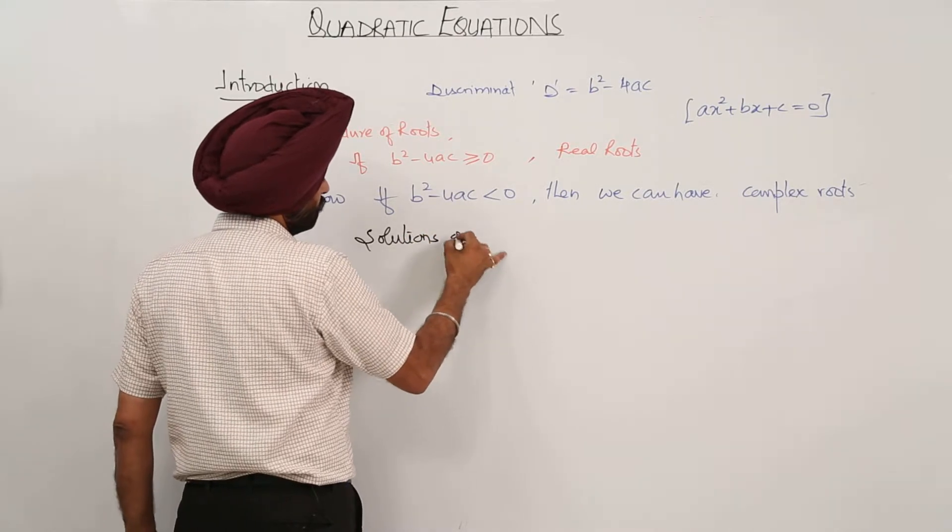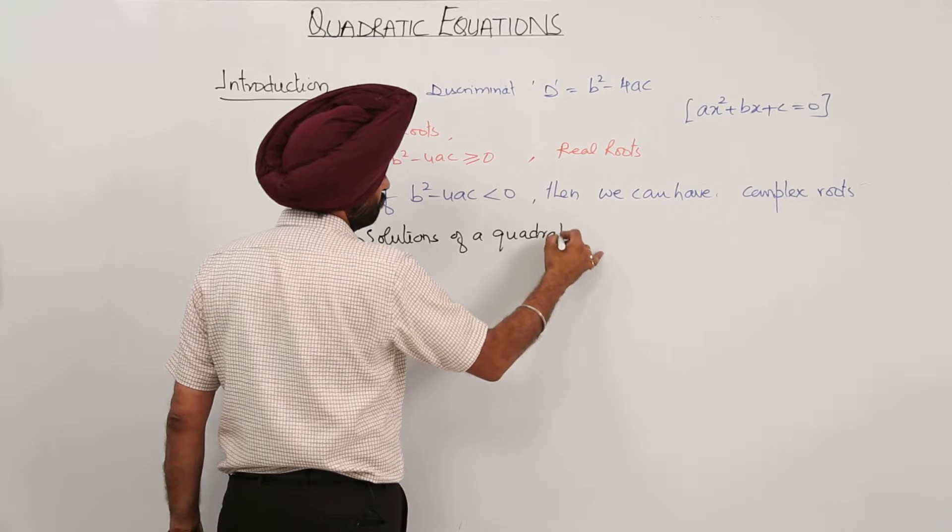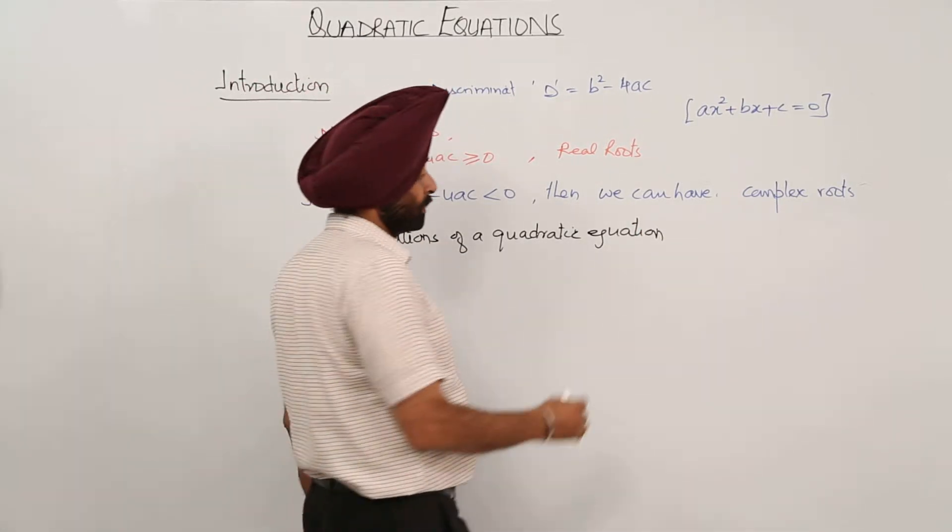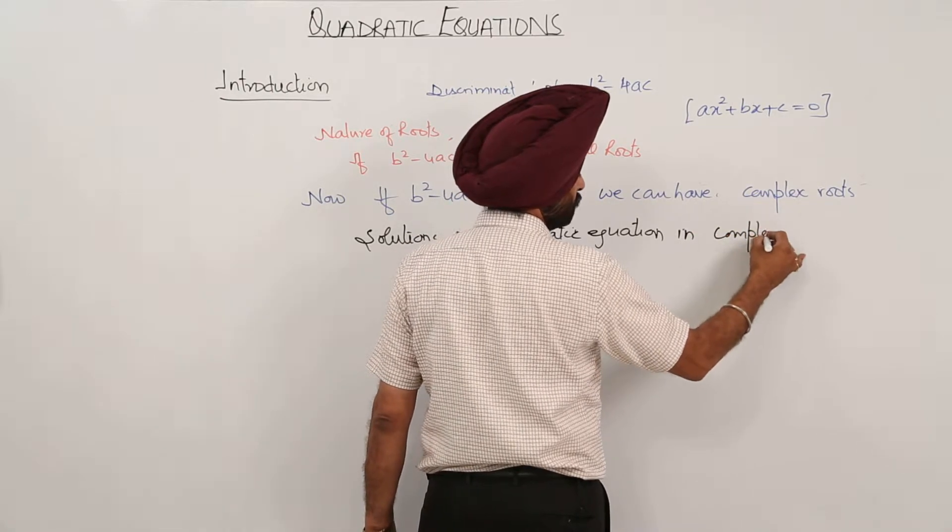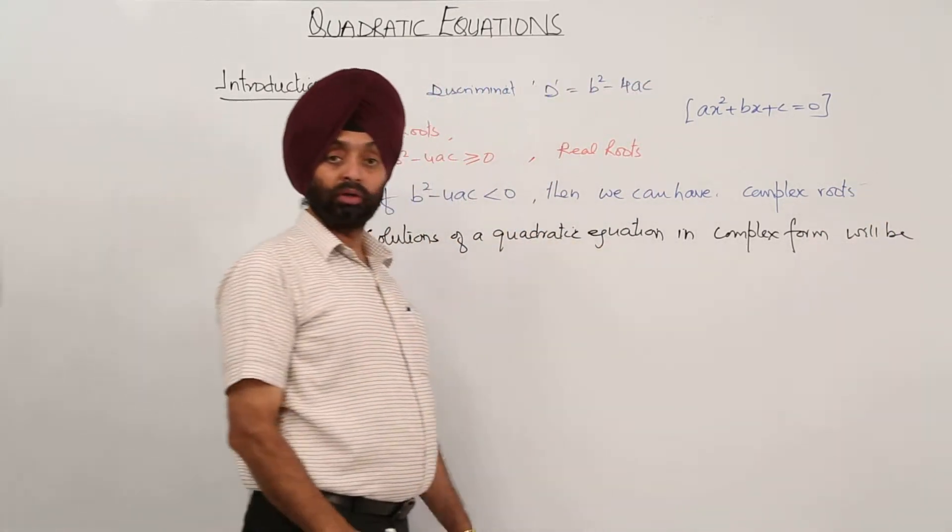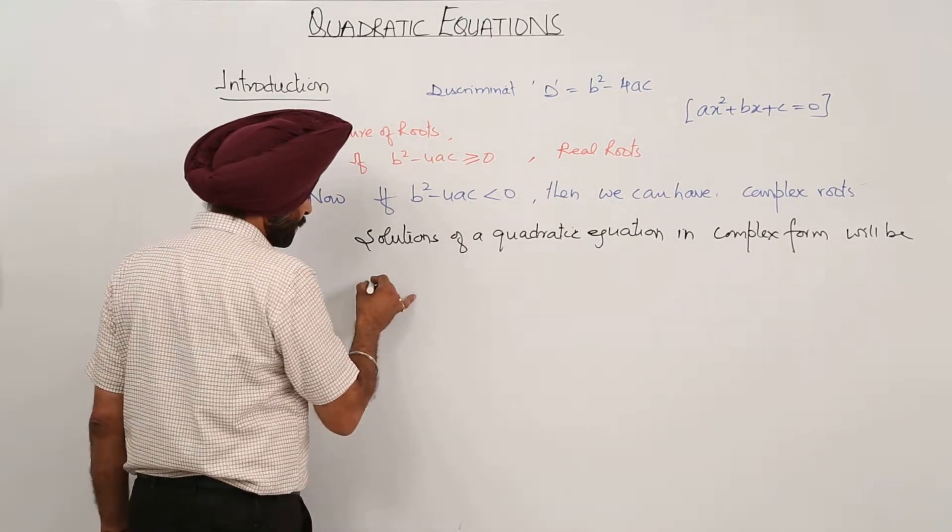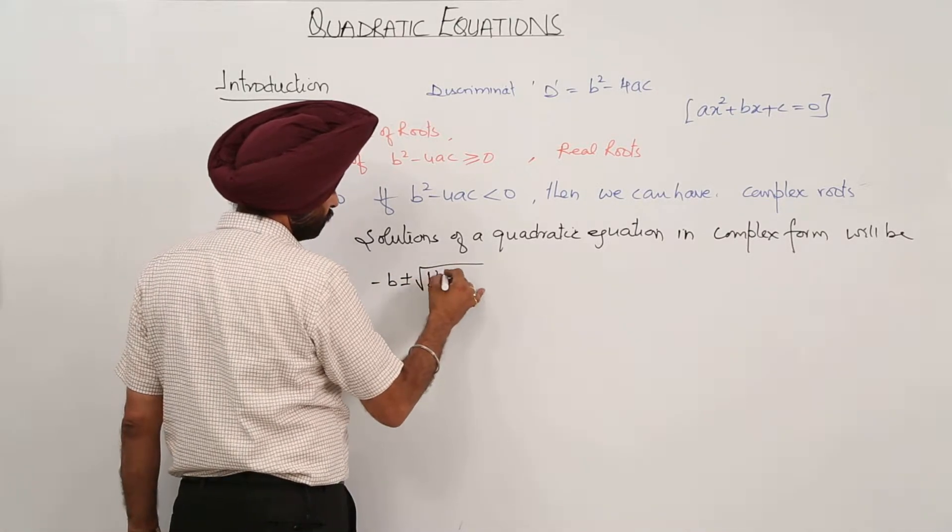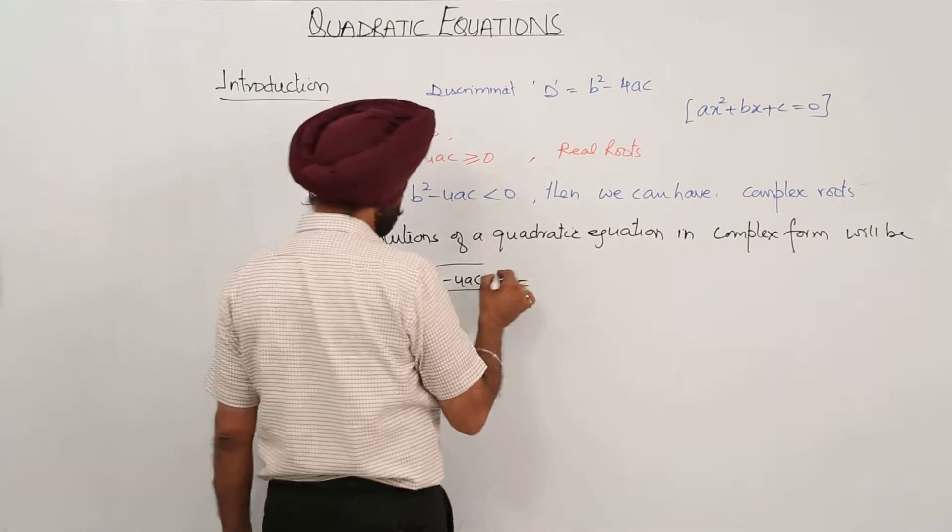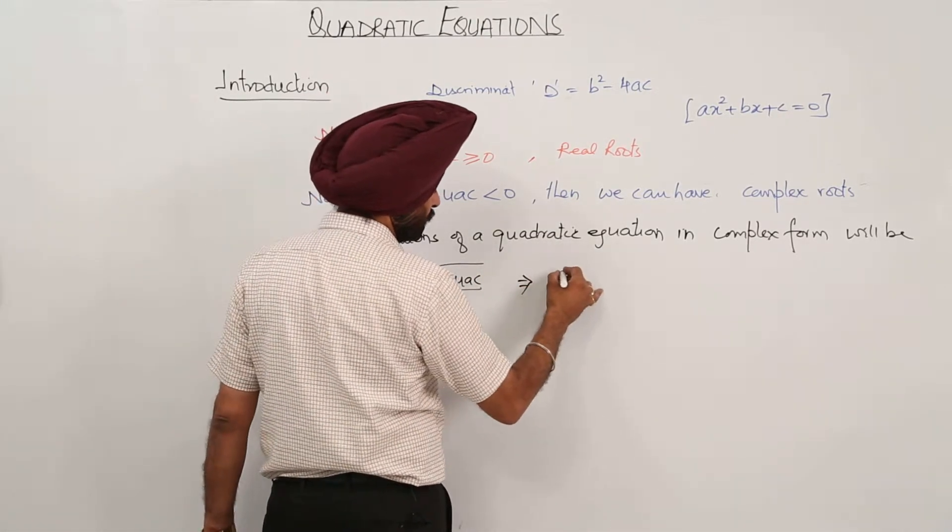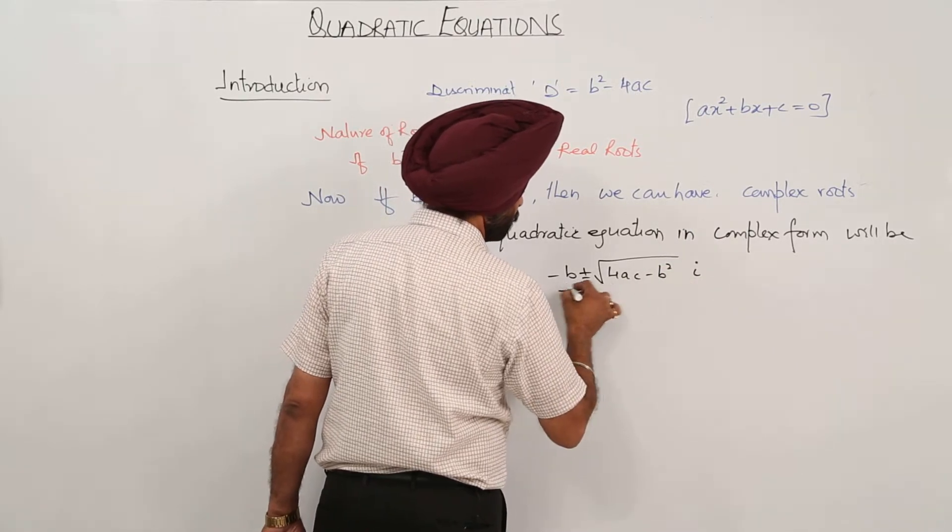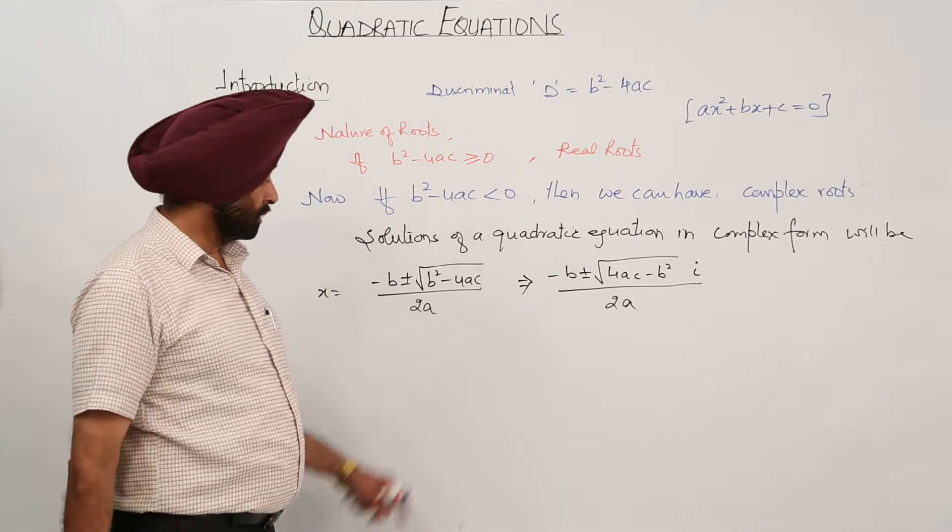Solutions of a quadratic equation in complex form will be: Now in complex form what will be? Earlier it was negative of b plus minus b square minus 4ac upon 2a. Now this will be equal to negative of b plus minus minus 4ac minus b square with iota upon 2a. This is the complex form.